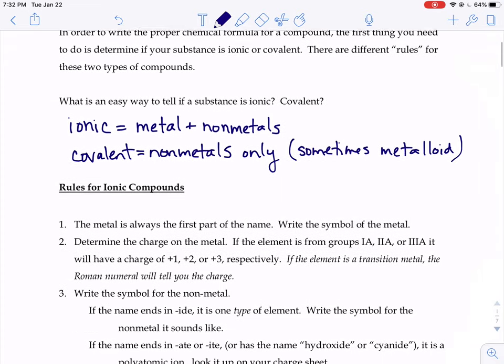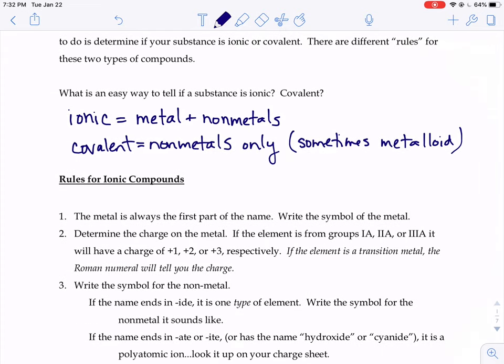We're going to focus for just a little bit on rules for ionic compounds and then we'll come back in a few minutes and focus on the covalent ones. First off, for those ionic compounds made up of metals with nonmetals, the metal portion is always the first part of the name. So you would just write the symbol of the metal. If you saw the word silver, you'd write down the symbol AG, or if you saw the word aluminum, you'd write down the symbol AL.